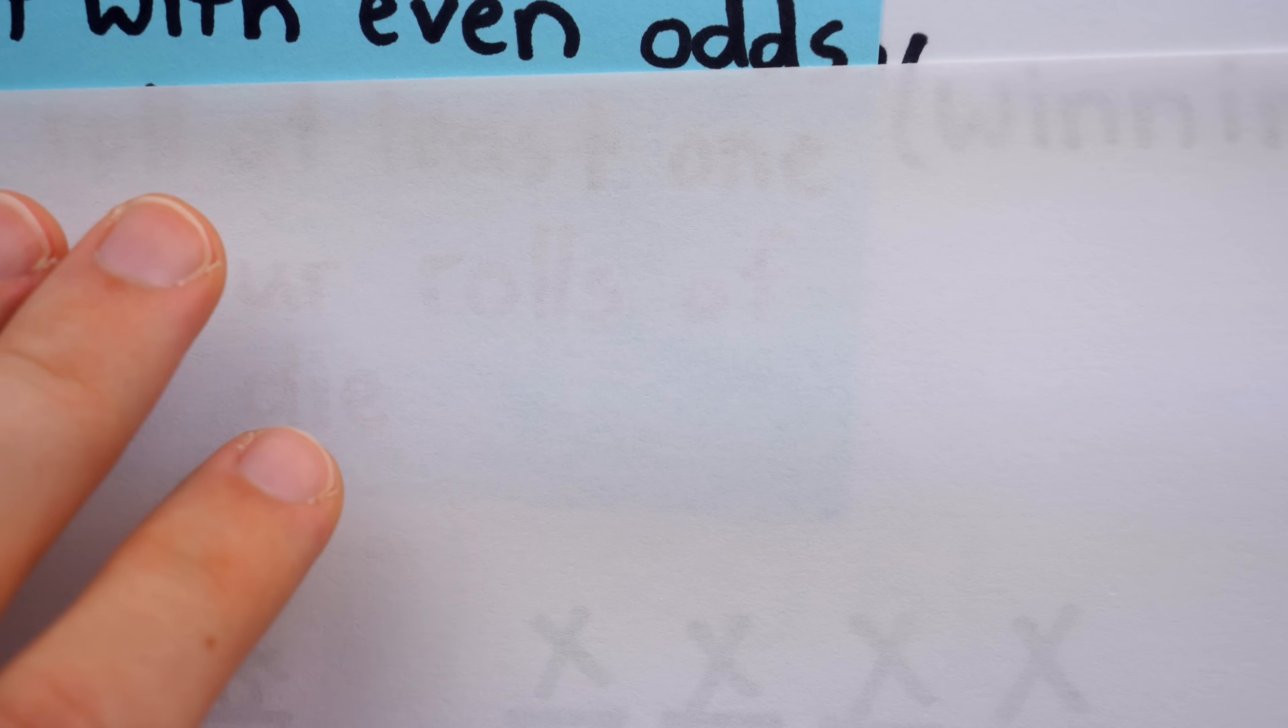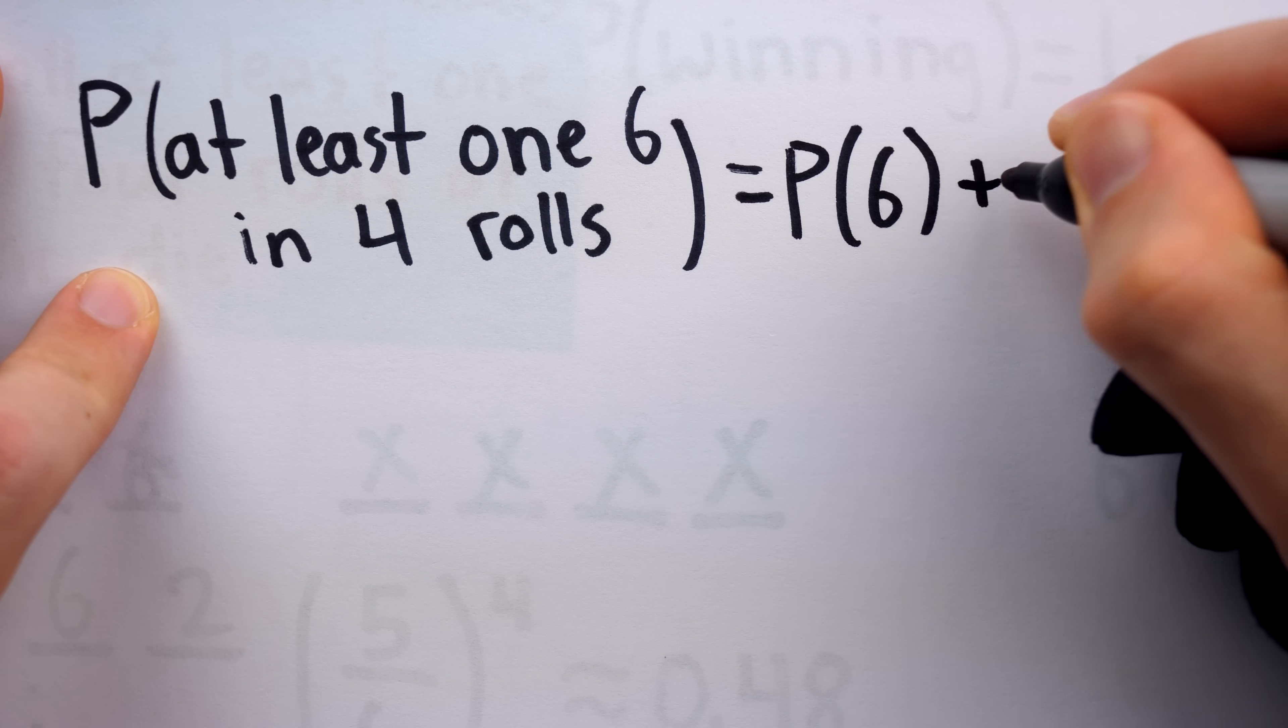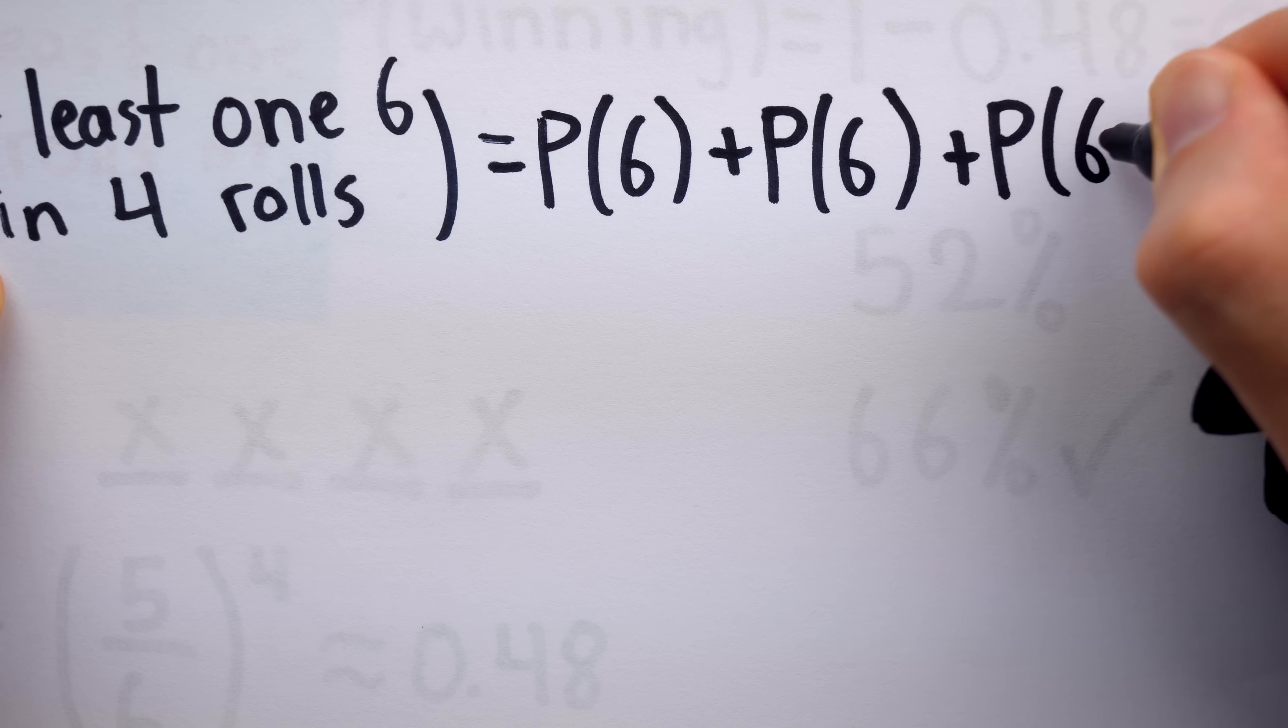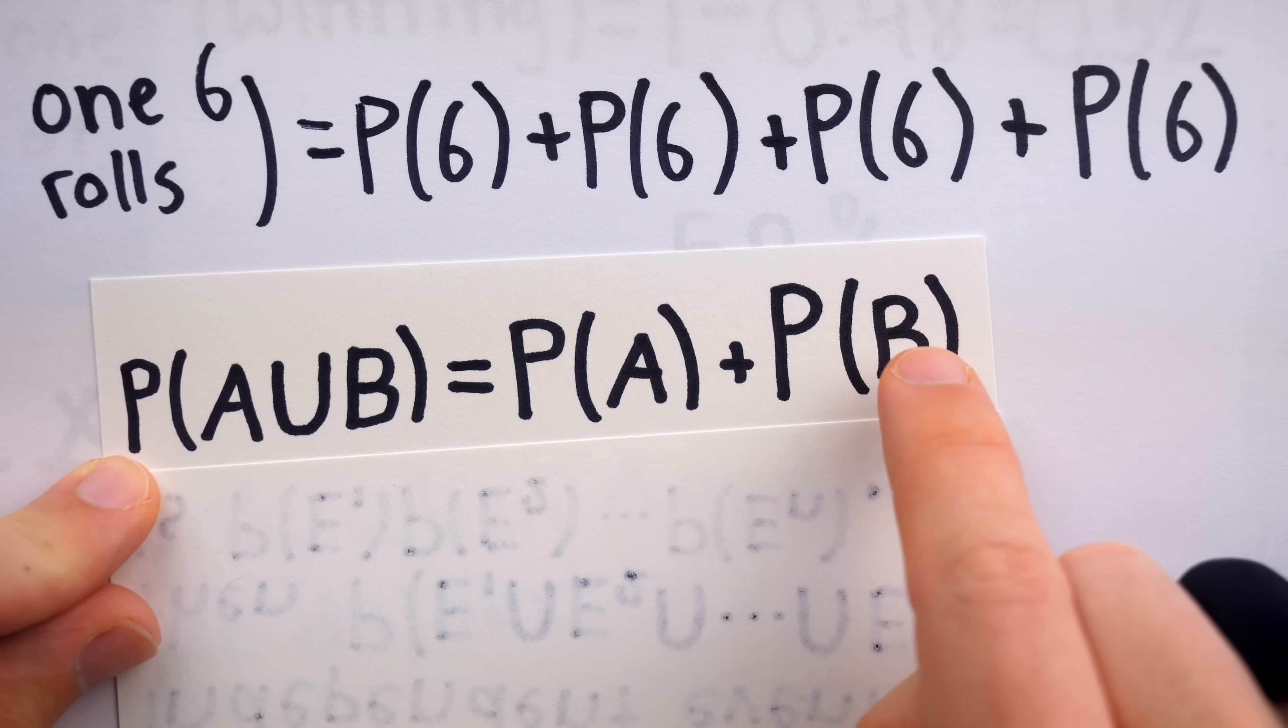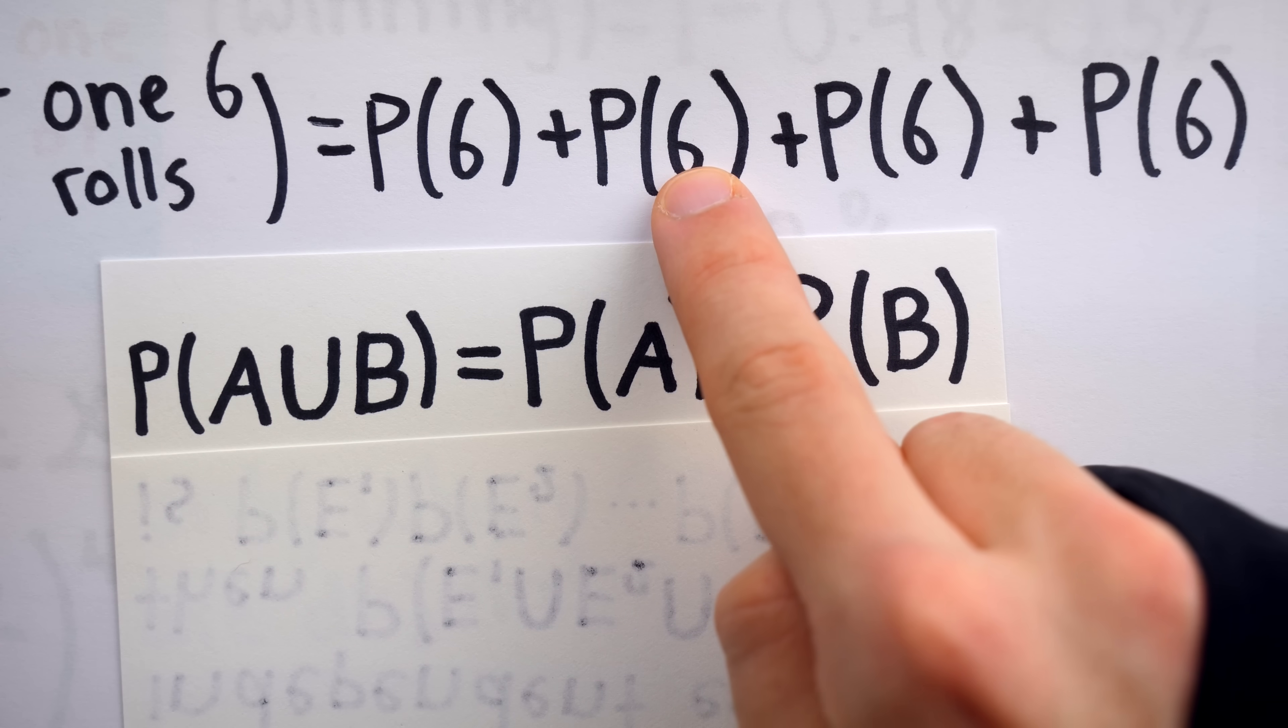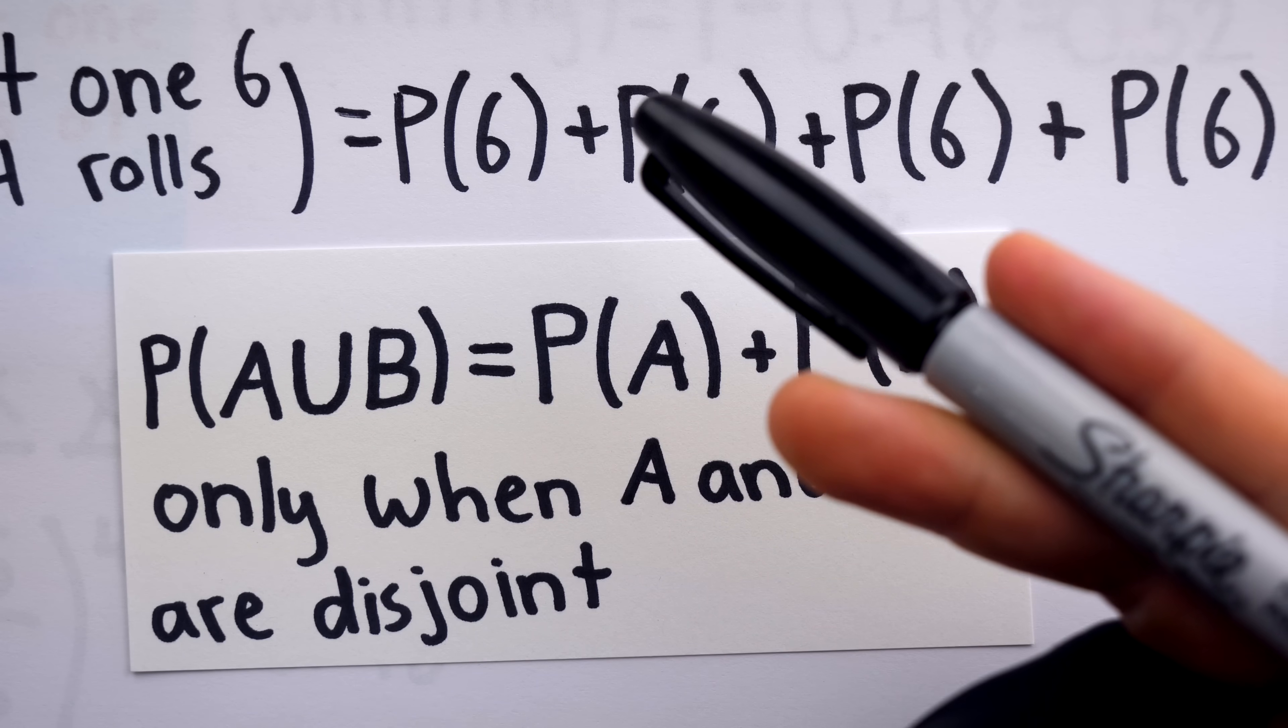Secondly, Damiré was making the fatal mistake of adding probabilities. He thought, for example, that the probability of at least one six in four rolls was the probability of a six on the first roll, plus a probability of a six on the second roll, plus a probability of six on the third roll, plus a probability of six on the fourth roll. He was unknowingly trying to apply this law, that the probability of a union of events equals the sum of their probabilities. This big U means union. You can think of it as just meaning or, like roll a six on the first roll, or the second roll, or the third, or the fourth. This formula does work, but only when the events, A and B, are disjoint, or mutually exclusive. The events of rolling sixes on different rolls are not mutually exclusive. They're not disjoint, because it's possible that all four of them, or three of them, or two of them, could occur at the same time.